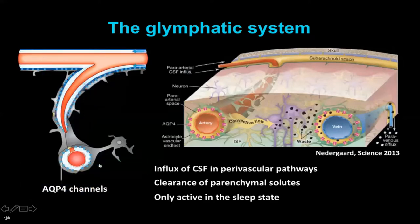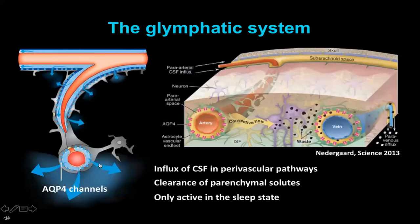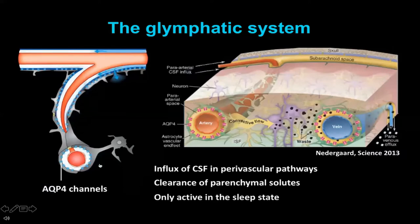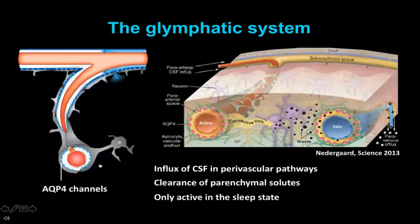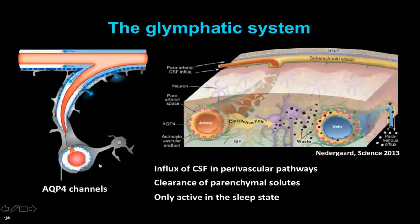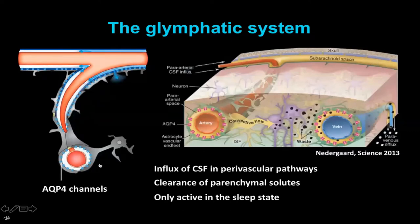We know now that aquaporin-4 channels expressed in astrocytes are vital for the distribution of CSF from the CSF spaces to the brain parenchyma. In essence, the glymphatic system is a fluid transport system: first, there is influx of clean CSF, which mediates clearance of solutes from the parenchyma. Interestingly, it's only active in the sleep state and also when anesthetized with certain anesthetics that have a high proportion of delta waves resembling normal sleep.